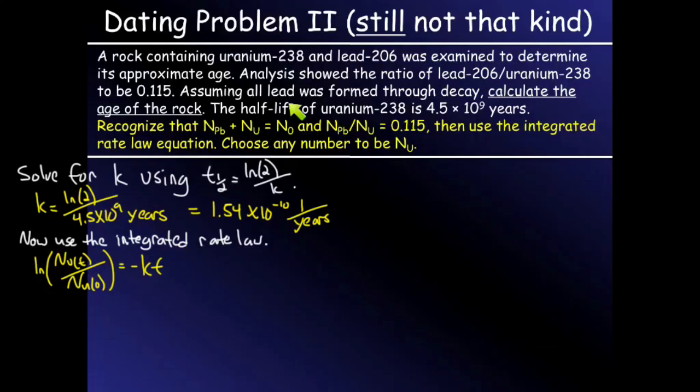And I also know that I'm going to assume all of the lead was formed through the decay. So if all of the lead was formed through decay, then the number of initial uranium-238 radioactive nuclides should be equal to the number of uranium-238 nuclides that are still in the rock plus the number of lead-206 nuclides that were formed. So if I had 100 of these, and let's say 70 of them turned into lead, then I would have 30 left, and 70 would be lead. So 70 and 30 would give me my original 100.